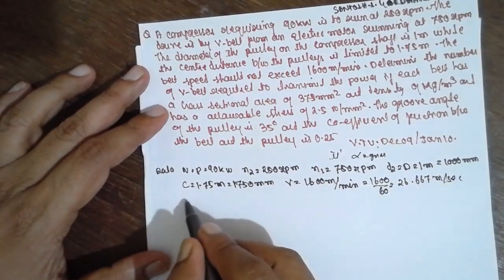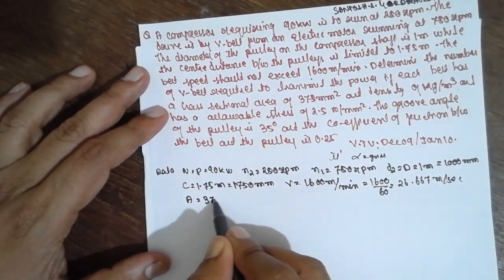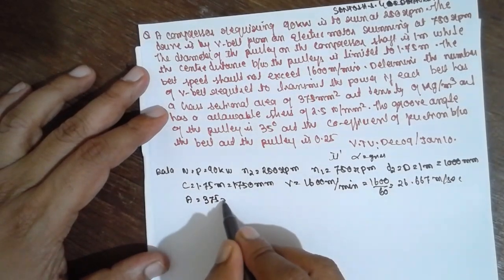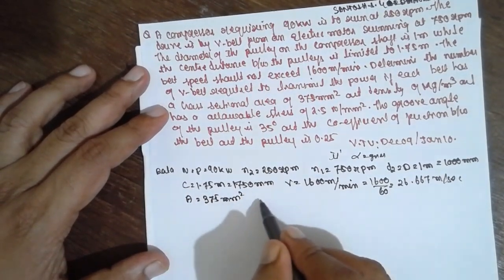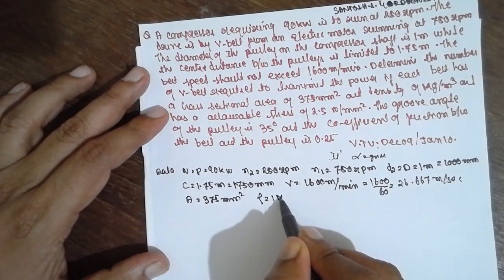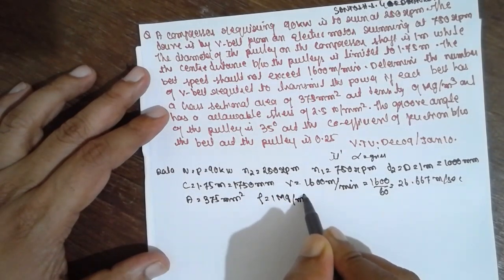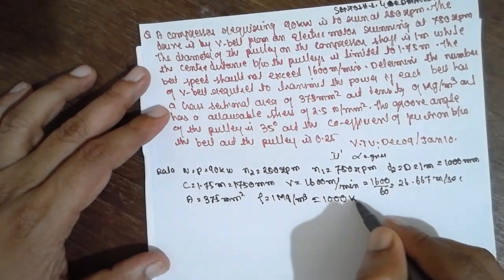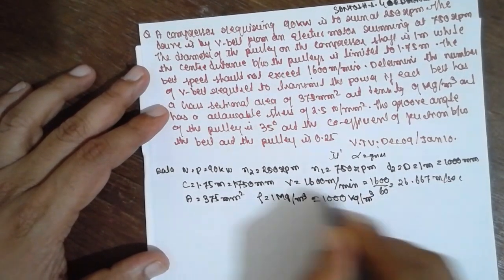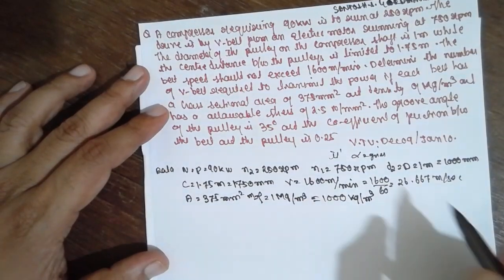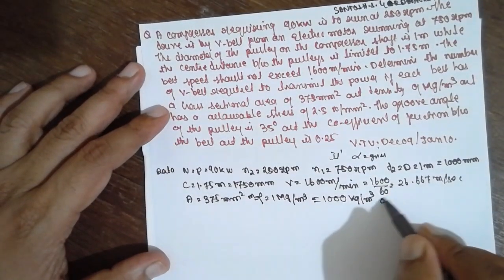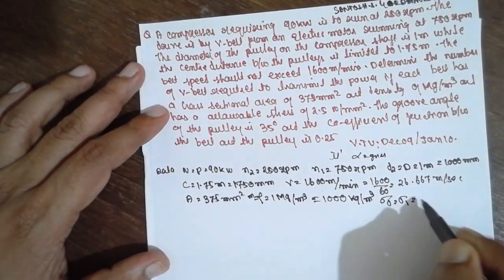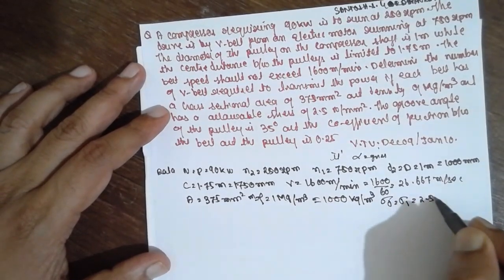Area they have given 375 mm square. Rho 1 mg per cubic meter, that is 1000 kg per cubic meter, or you can consider it as md. Sigma d and sigma 1 they have given 2.5 N per mm square.